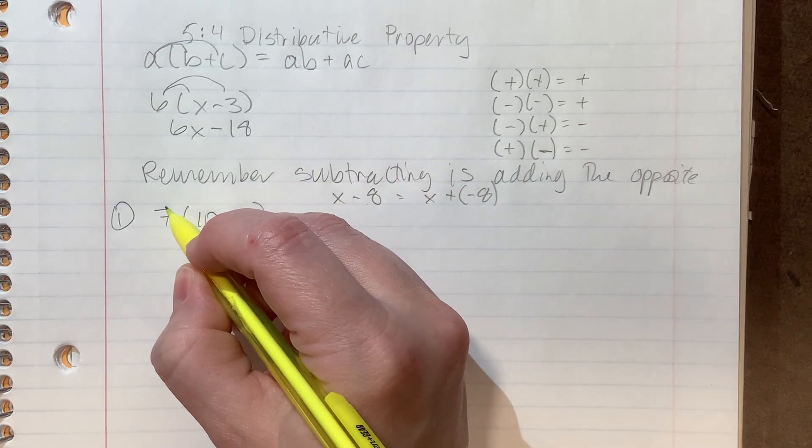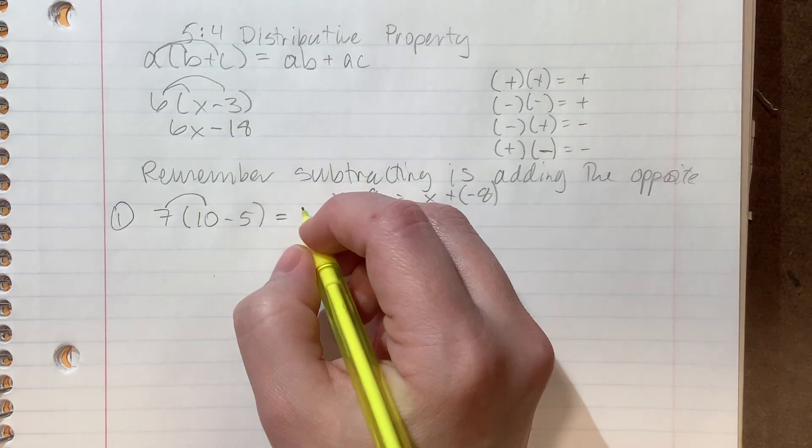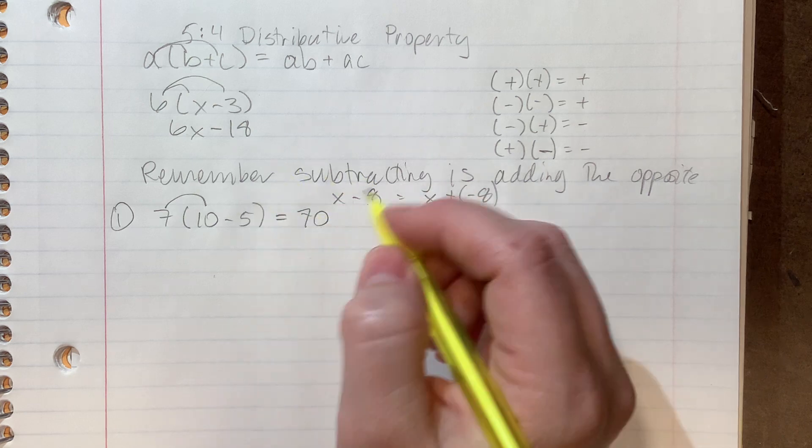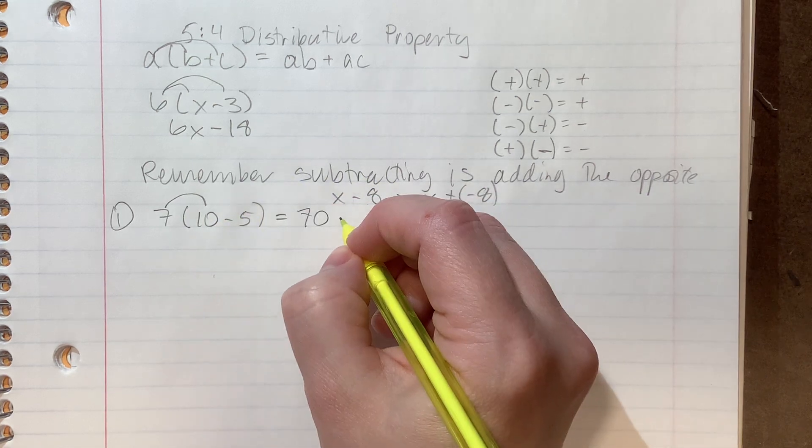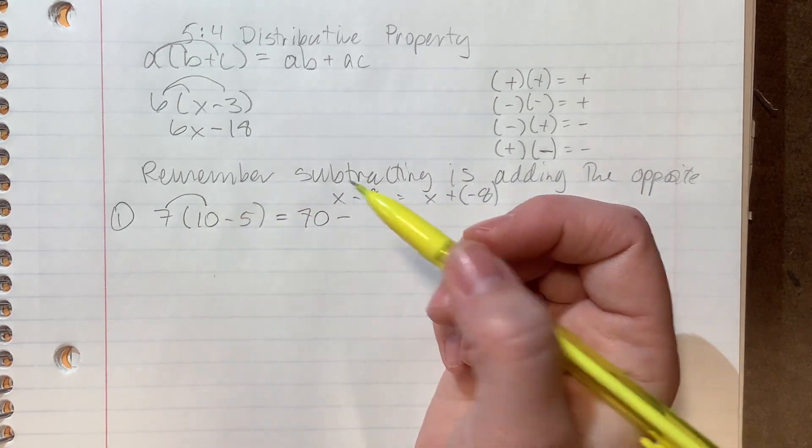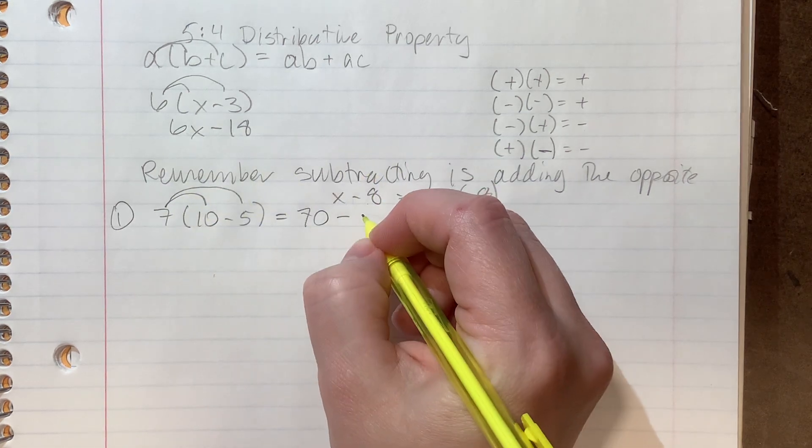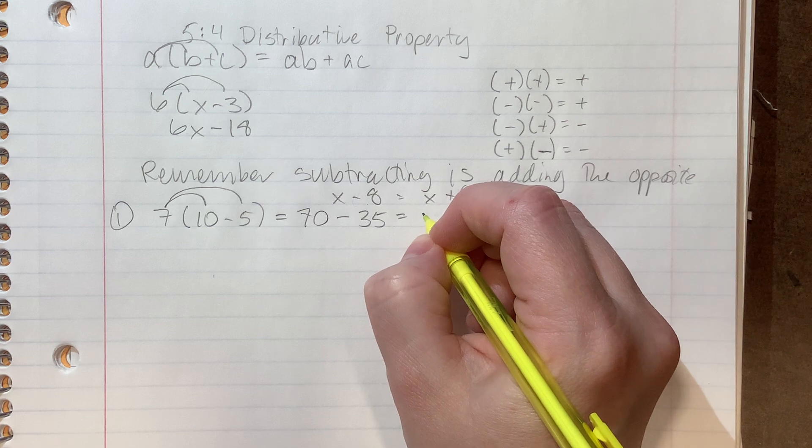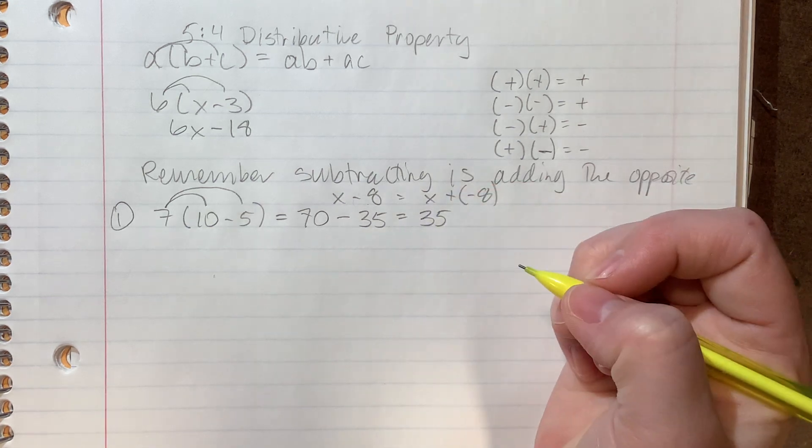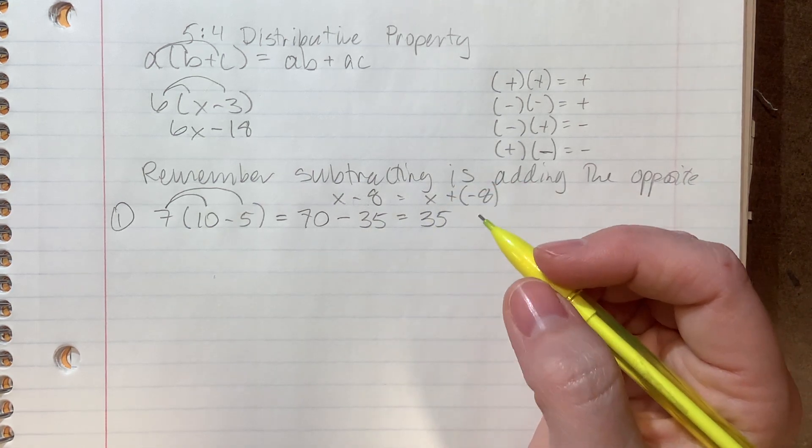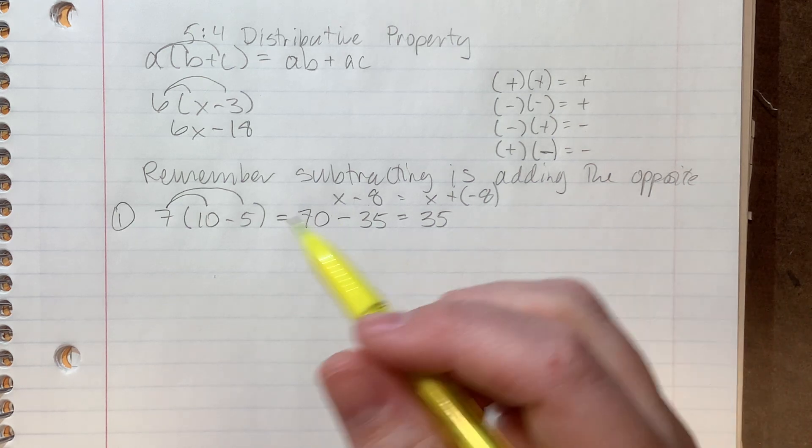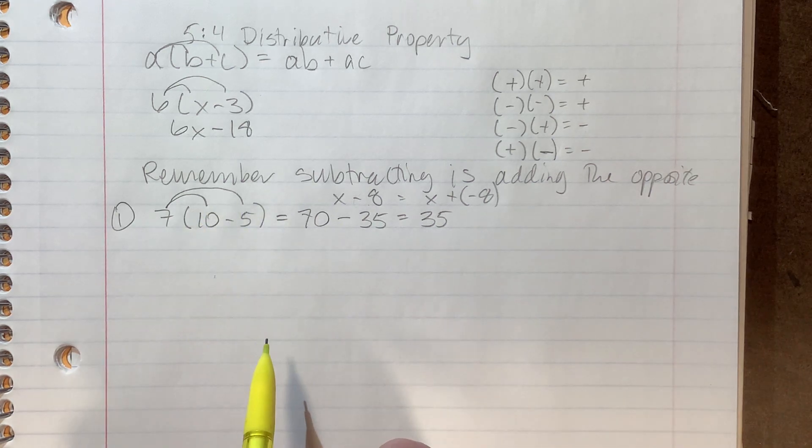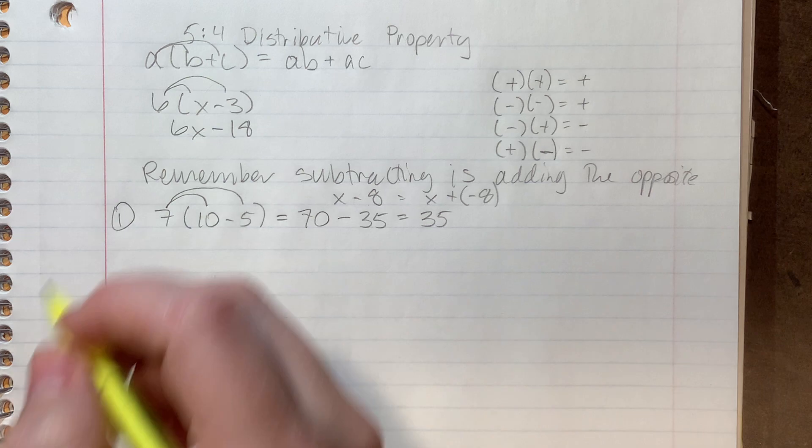So what that looks like is you're gonna do seven times 10, which is 70. Keep the sign, because we're not multiplying by a negative. So we can do seven times five is then 35. 70 minus 35 is 35. So I know it feels a little weird to do that right now. But the whole point of this is to practice the distributive property.